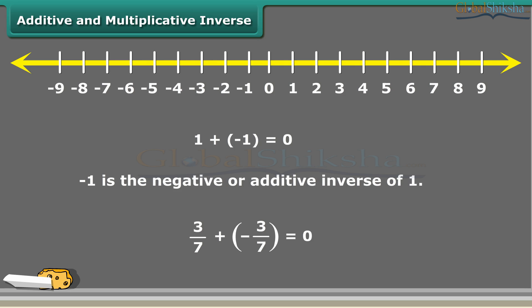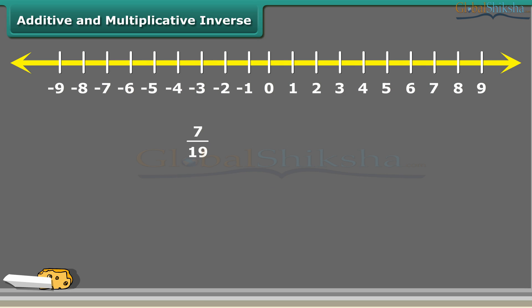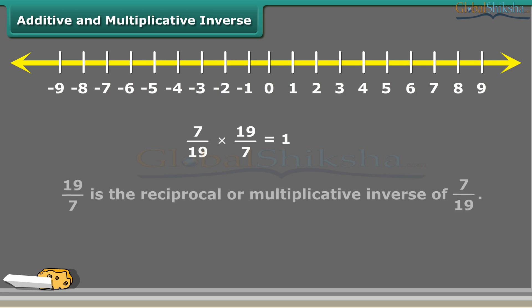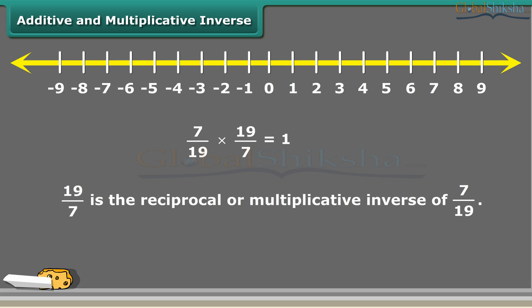By which rational number would we multiply 7 by 19 to get the product of 1? Obviously it is 19 by 7. So we say that 19 by 7 is the reciprocal or multiplicative inverse of 7 by 19.